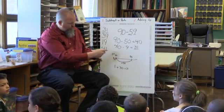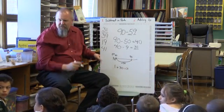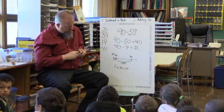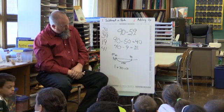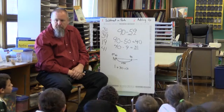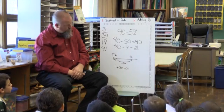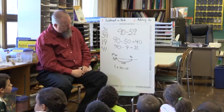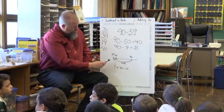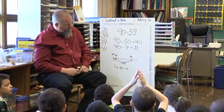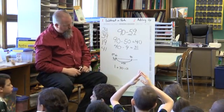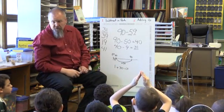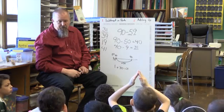Jacob, can you tell us how she did it in your own words? She started at 59, then she added 1 to get to 60, and then she added 30 to get to 90. Then 1 plus 30 equals 31 — she added her jumps.